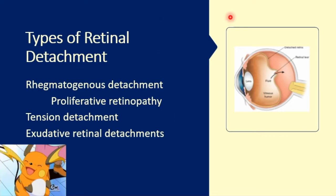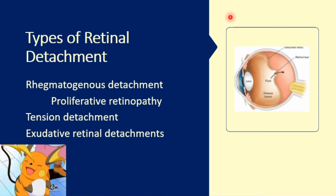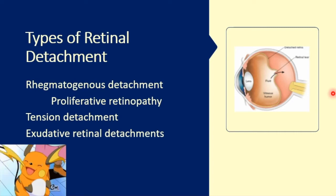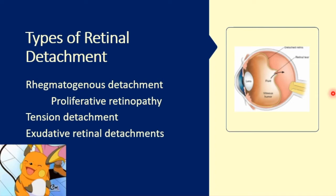There are several types of retinal detachment. You have your rhegmatogenous detachment, your traction detachment, and your exudative retinal detachment. Rhegmatogenous detachment is the most common form. What happens here is that a hole or a tear develops in the sensory retina, allowing the liquid vitreous to seep through and detach it from the RPE.